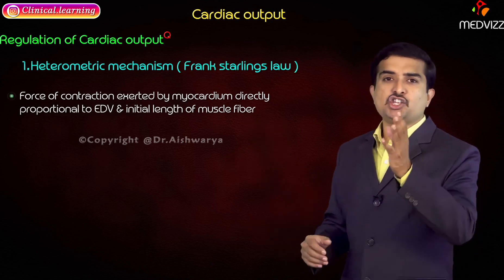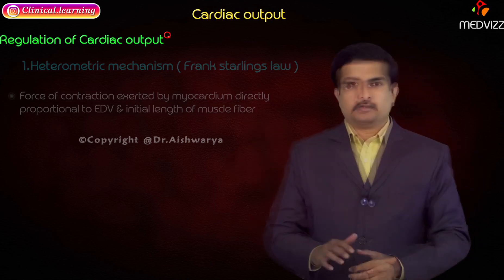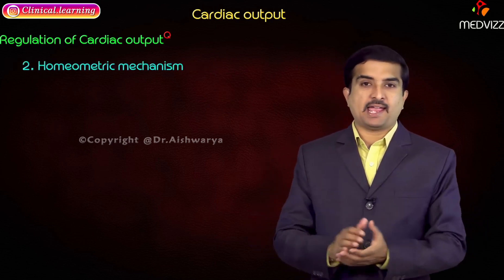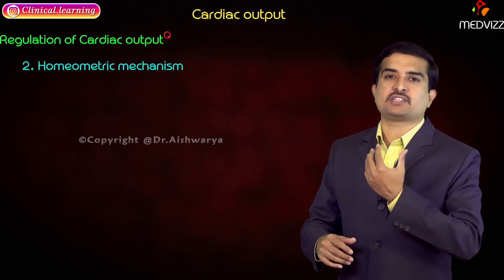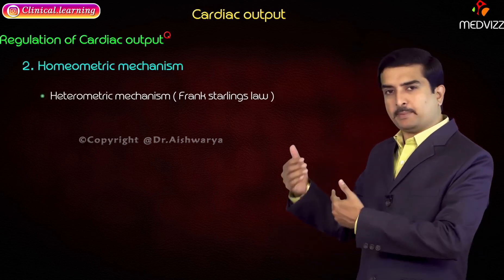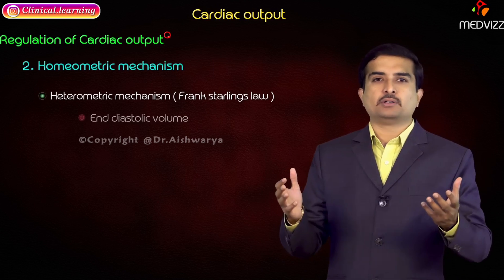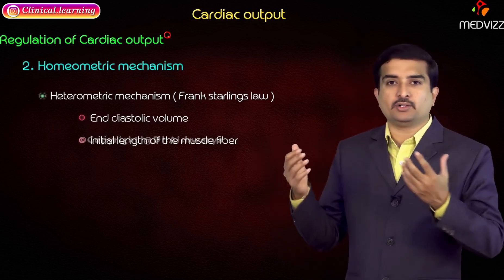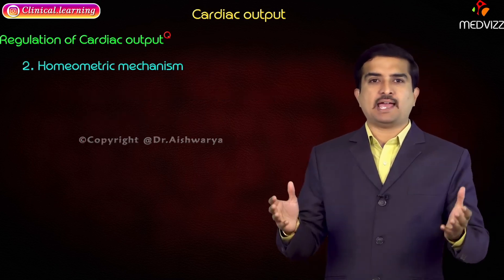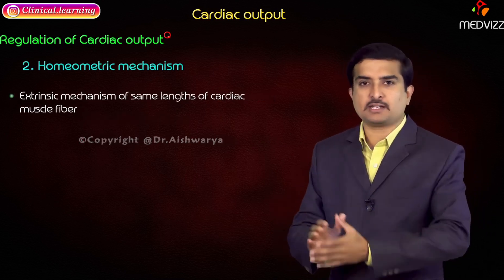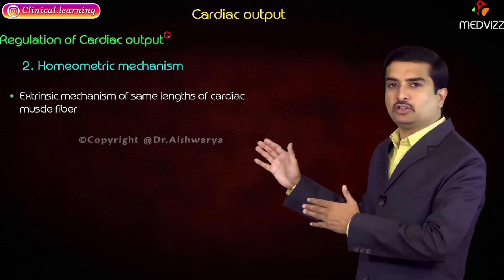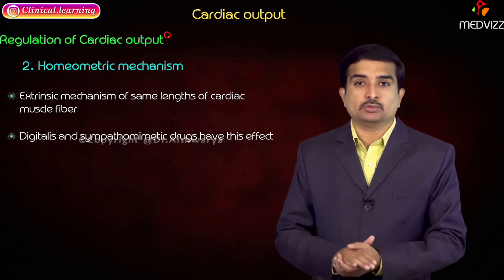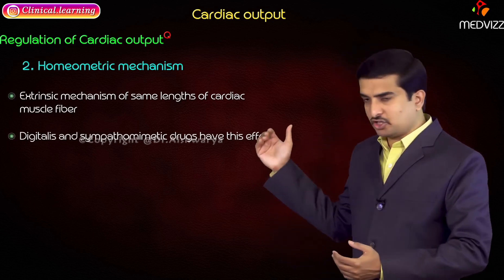The homeometric mechanism is the extrinsic mechanism, contrasting with the heterometric intrinsic mechanism which depends on EDV and initial length of muscle fibers per Frank-Starling's law. The homeometric mechanism operates at the same length of the cardiac muscle fiber. Digitalis as well as sympathomimetic drugs produce this type of effect.